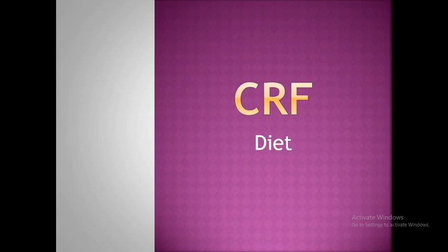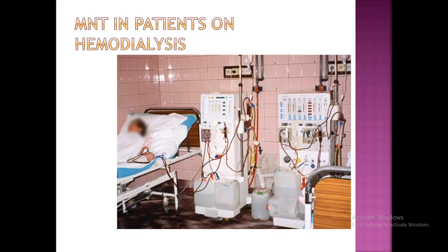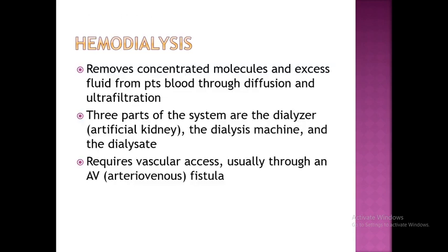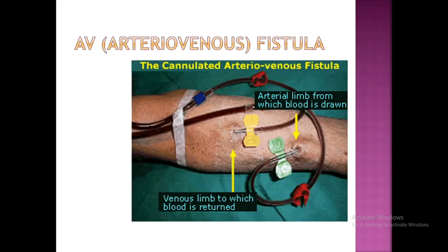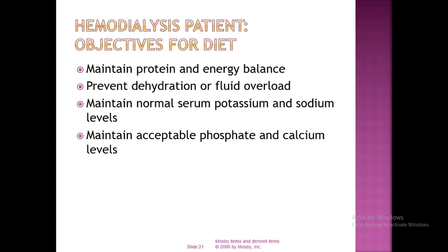Hemodialysis removes concentrated molecules and excess fluid from patient blood through diffusion and ultrafiltration. The three parts of the system are the dialyzer or artificial kidney, the dialysis machine, and the dialysate. It requires vascular access, usually through an arteriovenous fistula. Dietary objectives for hemodialysis patients are to maintain protein and energy balance, prevent dehydration or fluid overload, maintain normal serum potassium and sodium levels, and maintain acceptable phosphorus and calcium levels.